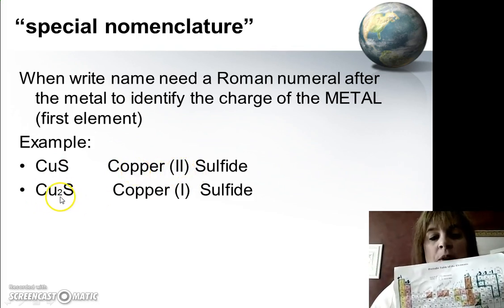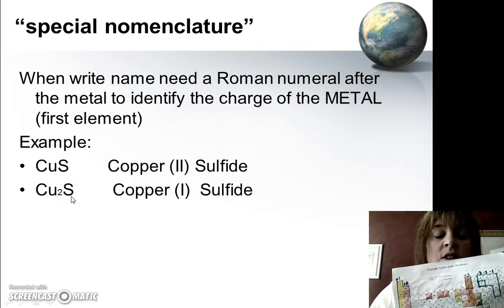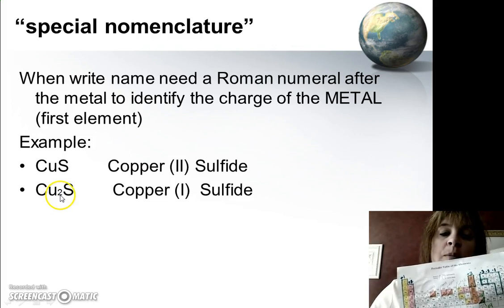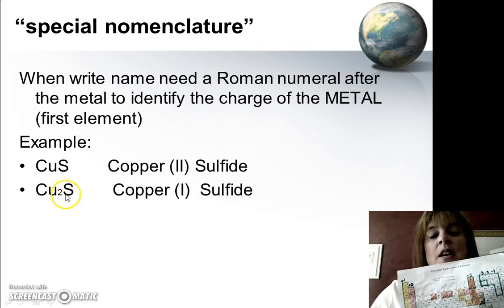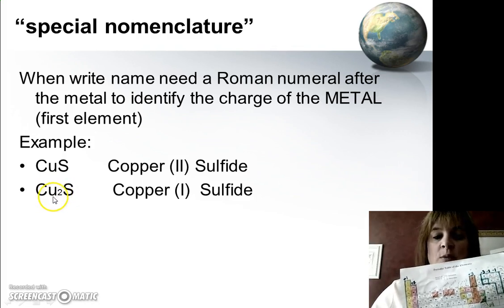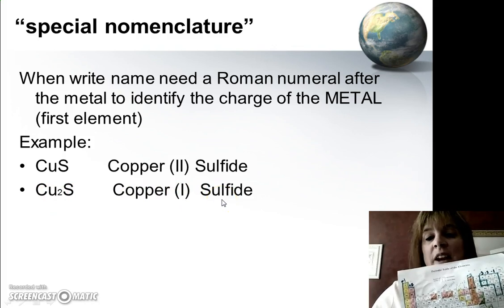Here, I have two copper atoms for every one sulfur, and since we know sulfur is minus 2, then this must be copper plus 1, because I need two of them in order for my charges to equal 0. So I write copper, Roman numeral 1, and then sulfide.